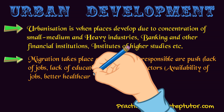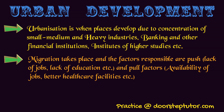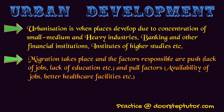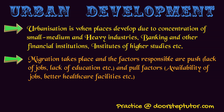The migration that takes place happens because of push and pull factors. Push factors are those which push you out — like lack of jobs, lack of educational facilities, or lack of healthcare facilities. Pull factors are those which attract you — like availability of jobs, better healthcare, better educational facilities, or better housing. Because of these push and pull factors, urbanization grows, and when you migrate, population increases and that area develops into an urban area.